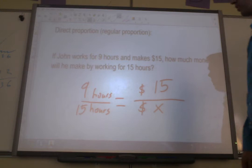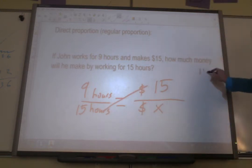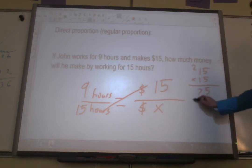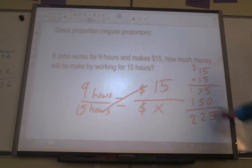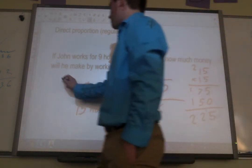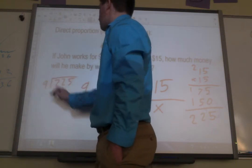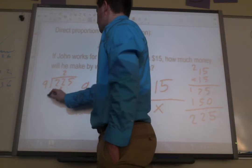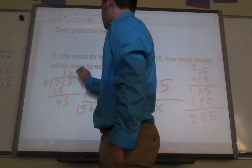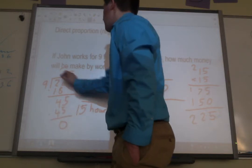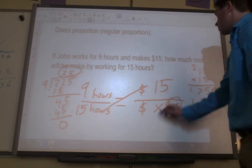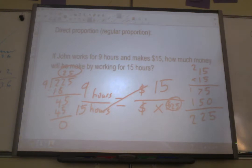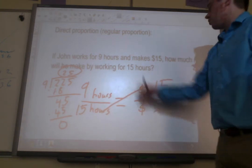Now we just had to cross multiply to solve it. 15 times 15, 15 times 15 would be our first step. That gives us 225. Then we would need to divide 225 by 9. And we see that he will make 25 dollars, x equals 25, so he'll make 25 dollars by working for 15 hours. Alright, that's how we would solve it. Hours with hours, dollars with dollars, cross multiply, and solve.